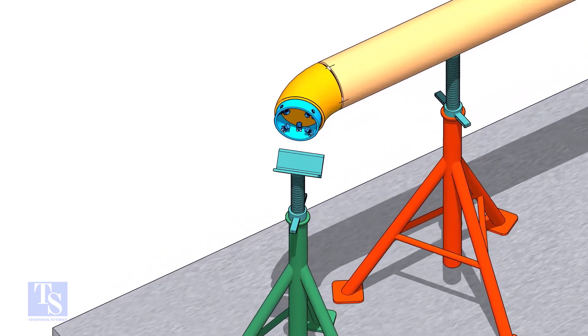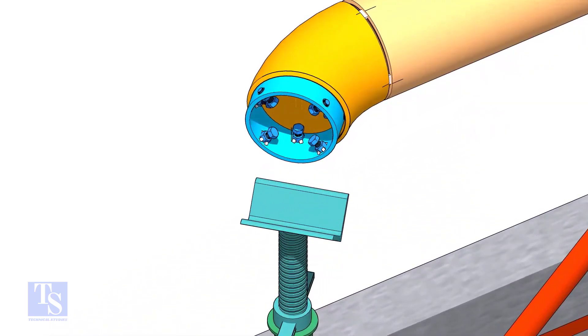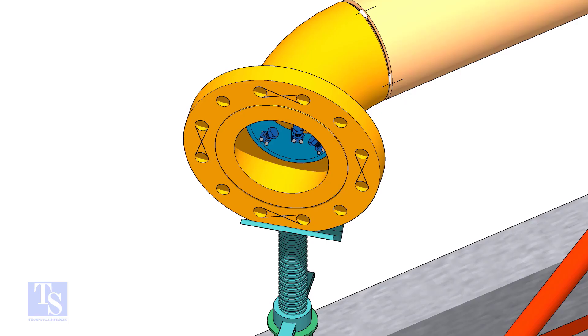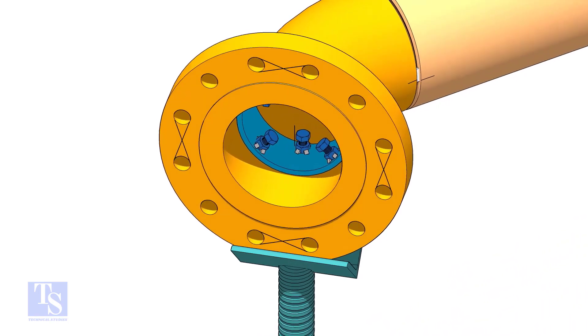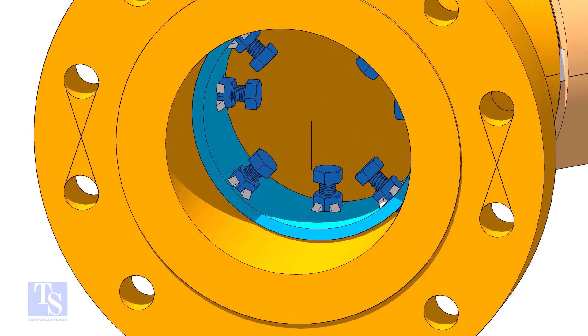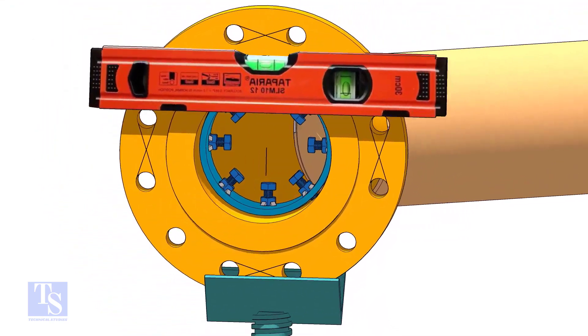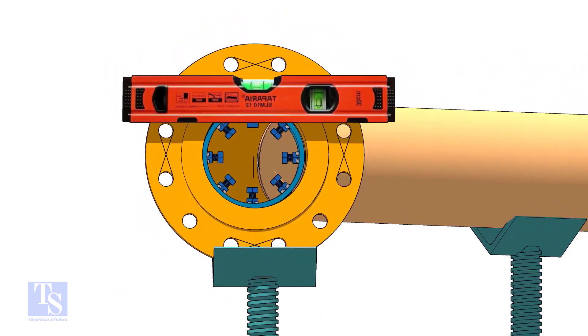Put the clamp in the elbow and tighten lightly. Put the flange in its position and maintain the level. Tighten the clamp bolts lightly.